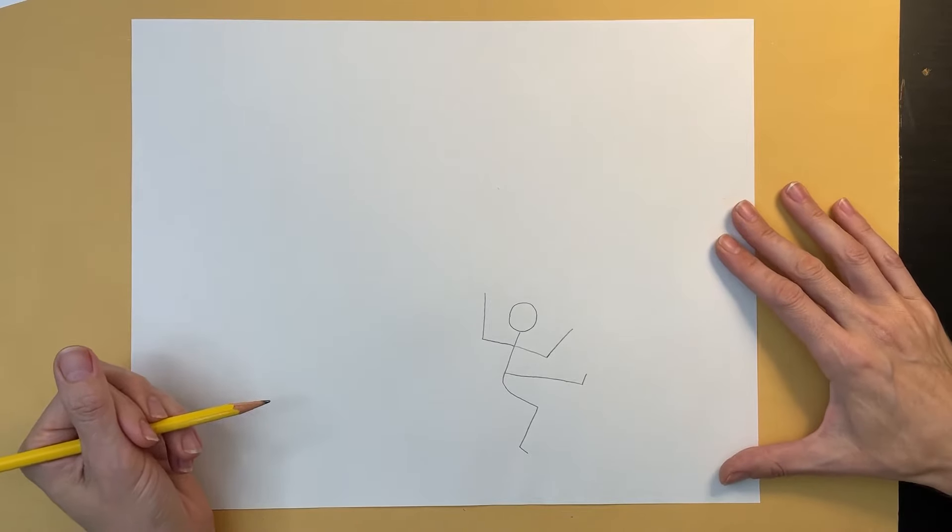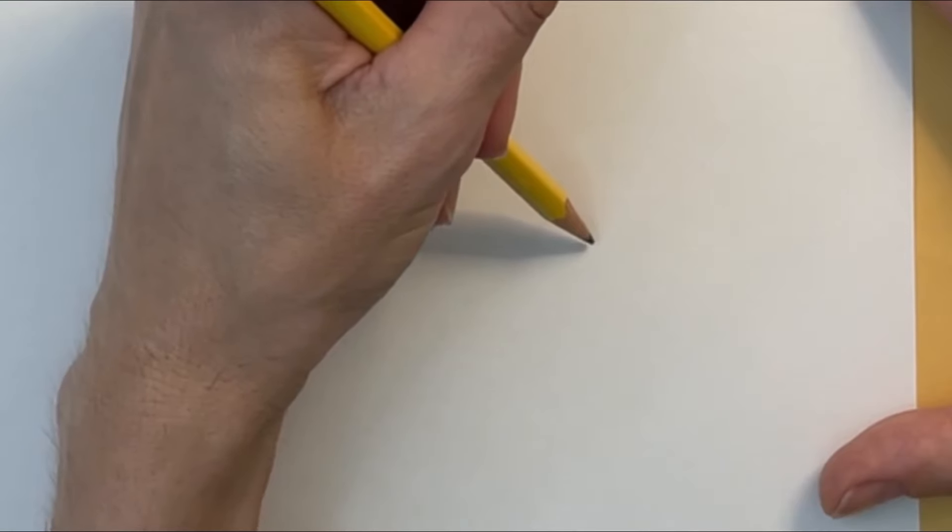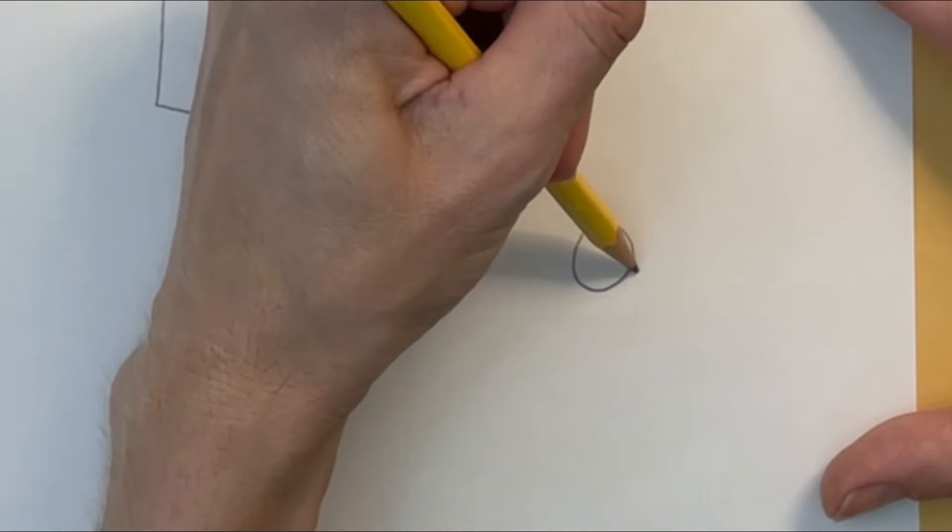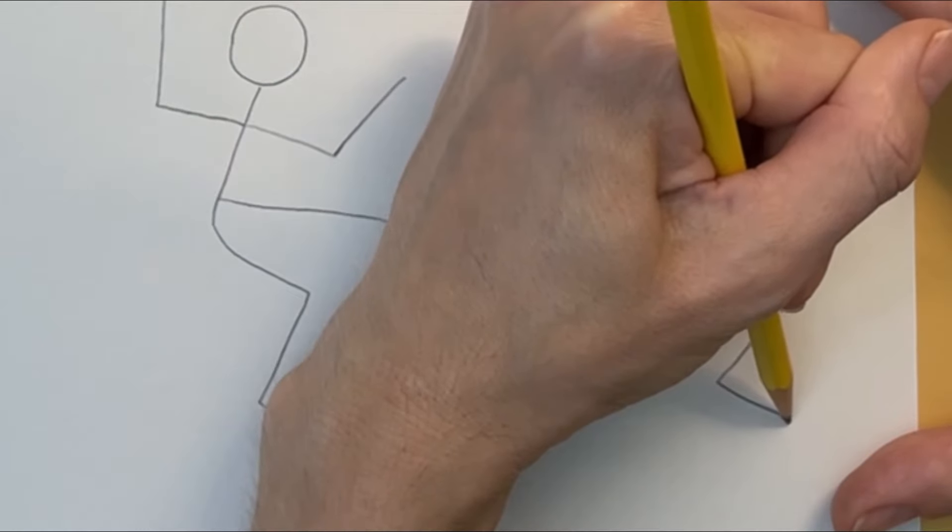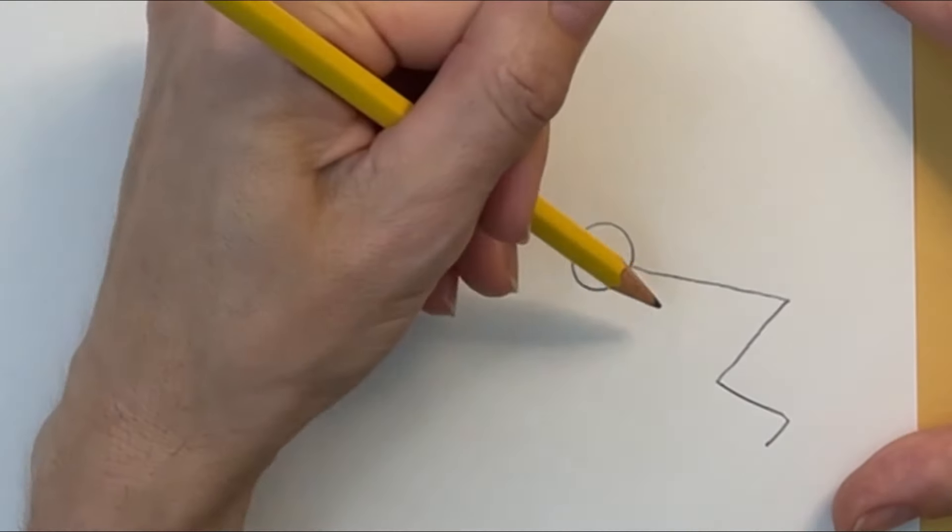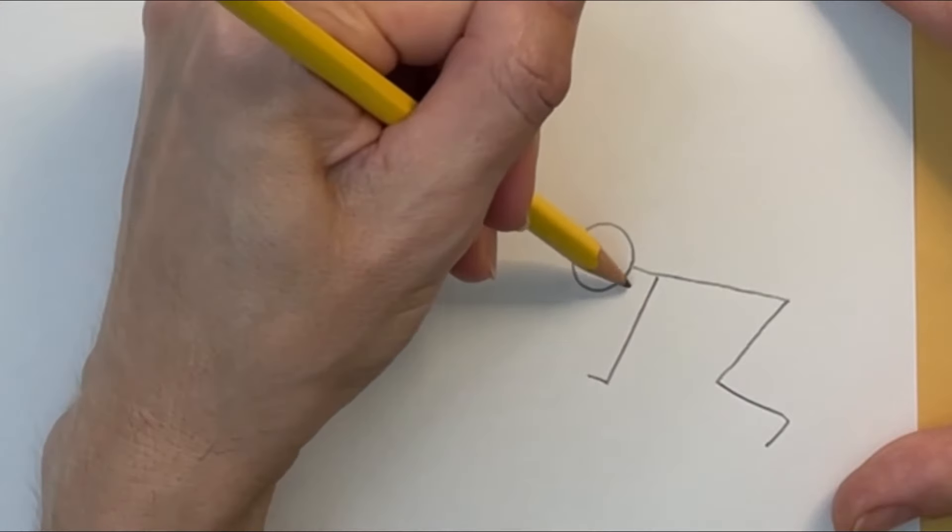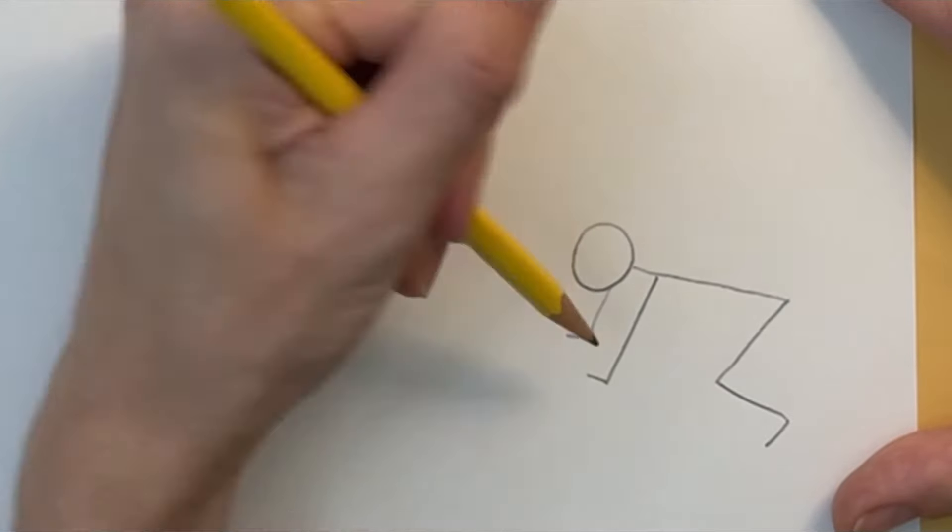I'm going to add radiant baby down here in the corner. A circle for the head, a straight back, bent legs, and a short straight line for the foot, and straight arms, and a short line for the hands.